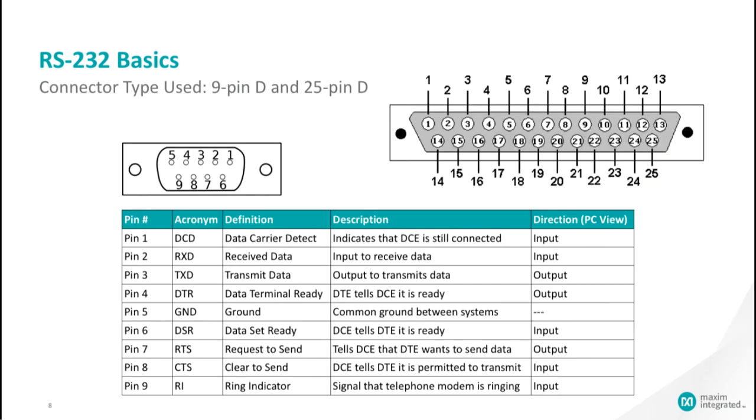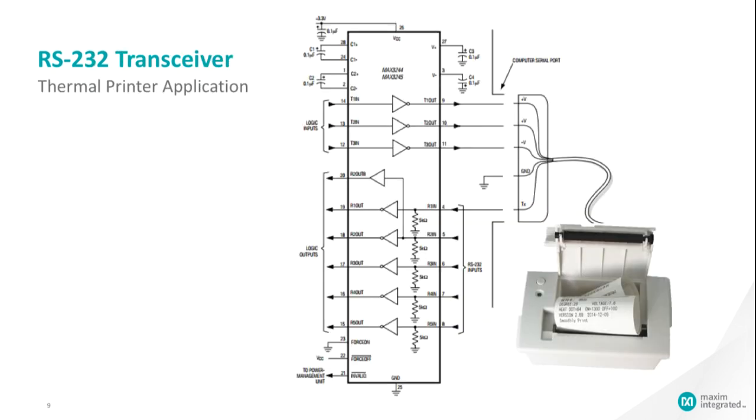These are the two types of connectors of the RS-232 interface: the 9-pin and 25-pin. Here is an example of an RS-232 transceiver with three transmitters and five receivers for a thermal printer application.